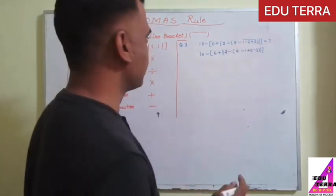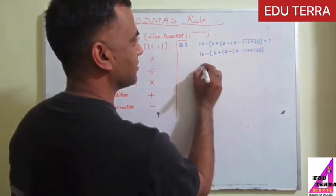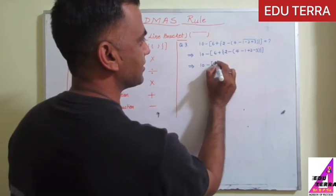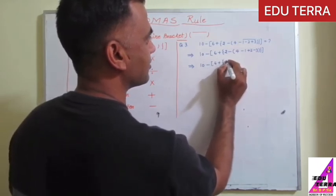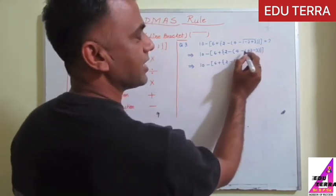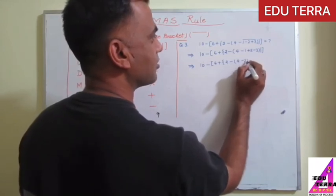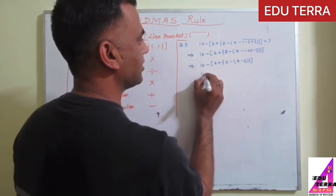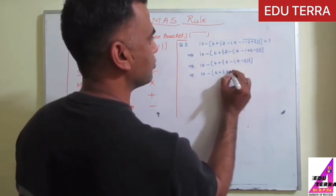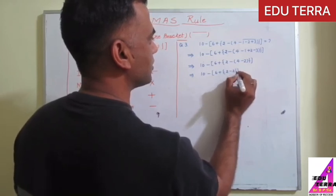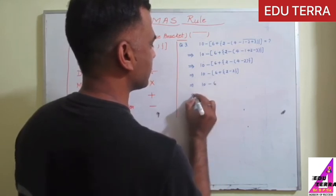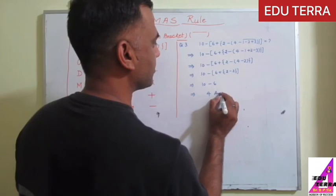Now solve it just as per the VBODMAS rule. 10, here you can use this sign. This implies minus 6 plus 2 minus 4, and it will come minus 3 and 1 minus 4, then it is minus 2 and all the bracket. So 10 minus 6 plus 2 minus 2. So here 10 minus 6, this equals to 4 is our answer.